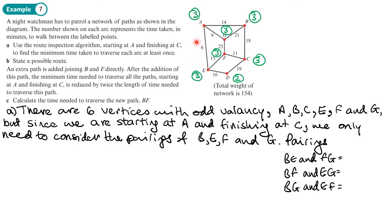For the first pairing, B,E and F,G: I want to get from B to E. The lowest weight route is B, A, E, which has a weight of 20. Then the weight of going from F to G - that's just going to be 25, because any other direction is going to be more than 25. So this pairing has a total weight of 45.